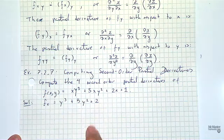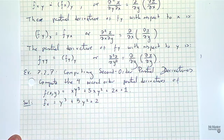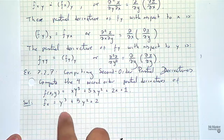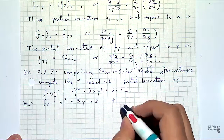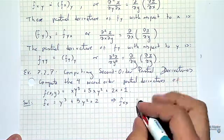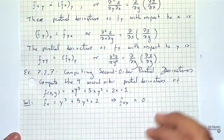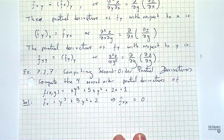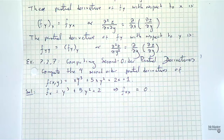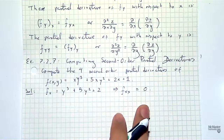After computing f_x, notice it is only a function of y. So the second derivative f_xx — taking the partial of f_x with respect to x again — gives zero, since nothing depends on x anymore. When we take the partial with respect to x, y is regarded as a constant, so the second derivative f_xx = 0.